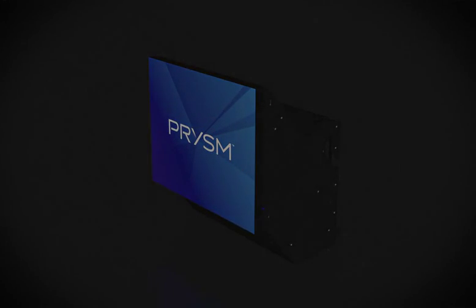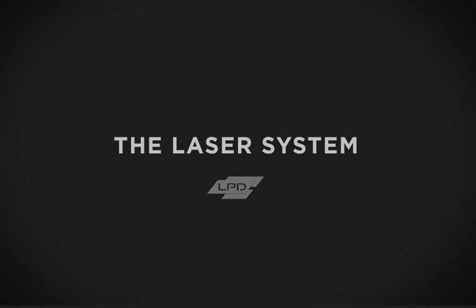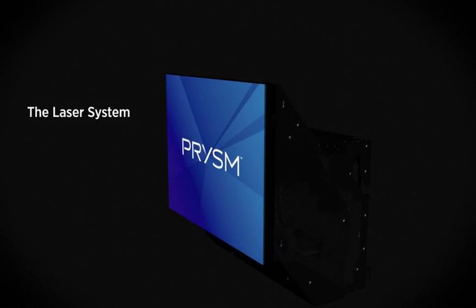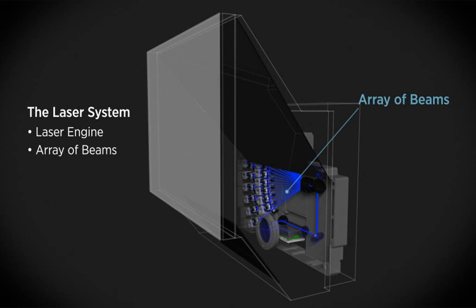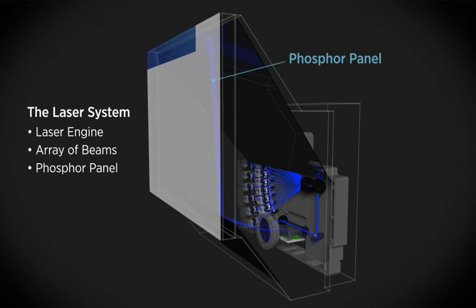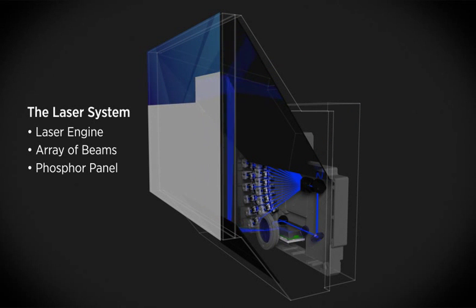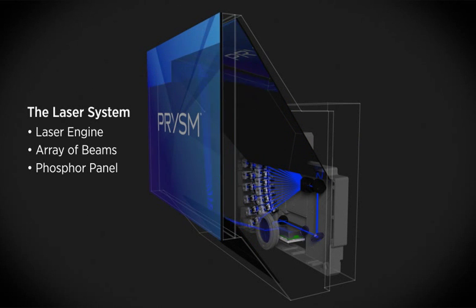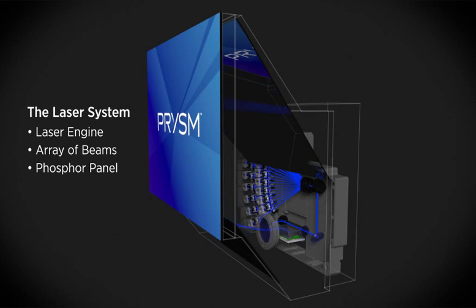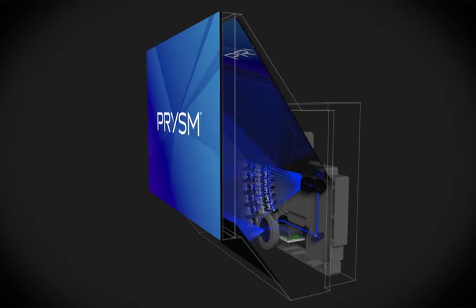Inside each display, the laser engine generates an array of laser light beams which are directed onto the phosphor panel by the scanning optical system. The system works to ensure exact placement of each pixel on the phosphor panel. The light beams, shown slower here, render information at nanosecond speeds to create a smooth, brilliant picture.